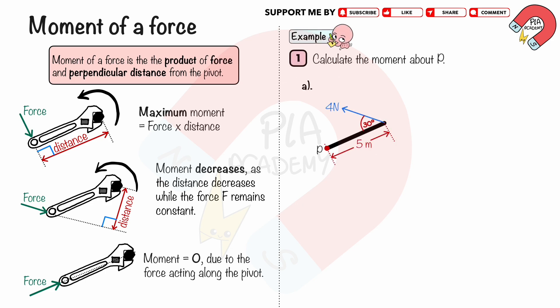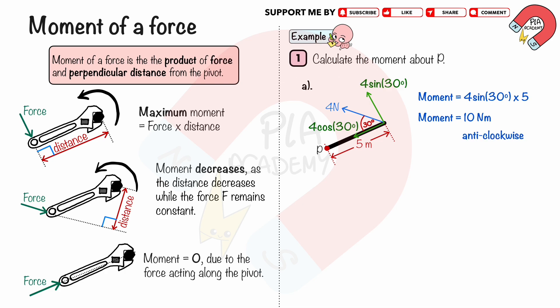Work Example 1: Calculate the moment about point P. Part A: A 4 N force acts on the rod at a 30-degree angle, creating a moment about point P, which is 5 meters from the point of force application. We resolve the 4 N force into components perpendicular and parallel to the rod. The perpendicular component is 4 sin 30° and the parallel component is 4 cos 30°. The moment of the 4 N force about P is 4 sin 30° multiplied by 5. We get the moment equals 10 N·m in the anticlockwise direction.